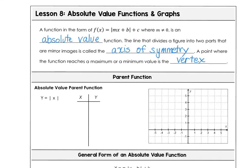This is lesson 8. We're going to look at absolute value functions and their graphs today. A function in the form y equals the absolute value of mx plus b plus c, where the slope isn't zero, is called an absolute value function.